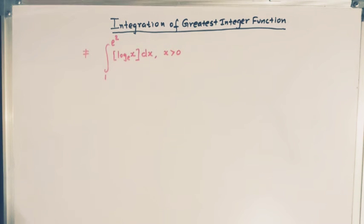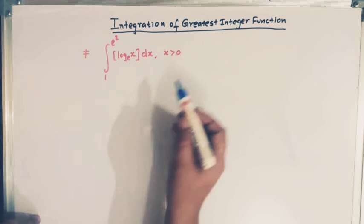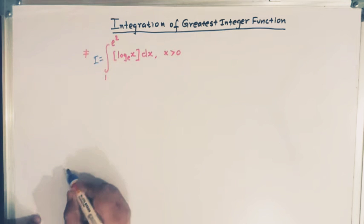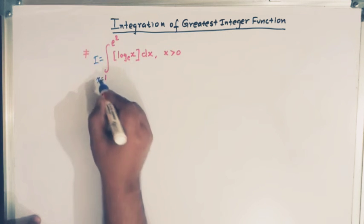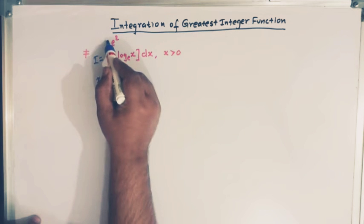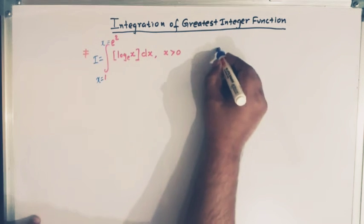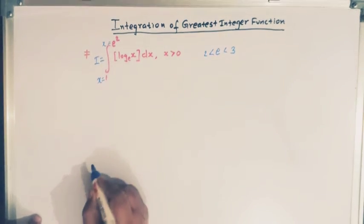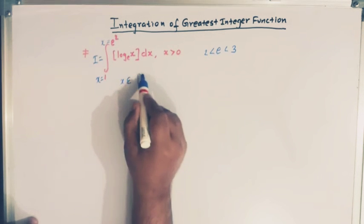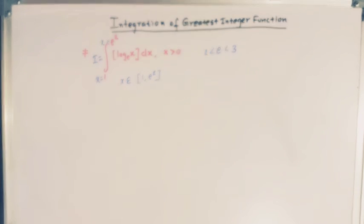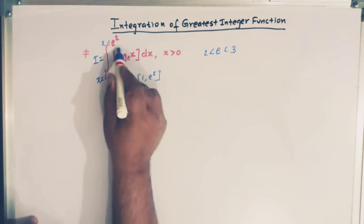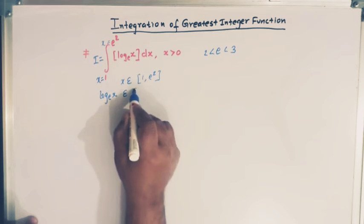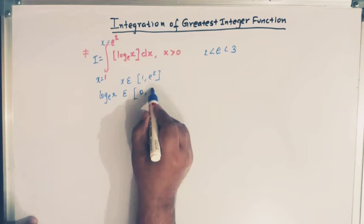Hello viewers. Today we'll solve this integral which involves the greatest integer function. Let us call this integral as I. The limits are from 1 to e², where e is the exponential number which lies between 2 and 3. Since x belongs to 1 to e², log base e of x belongs to 0 to 2.